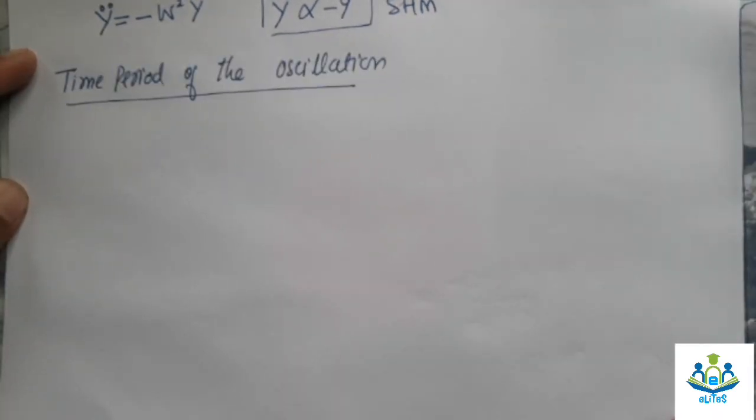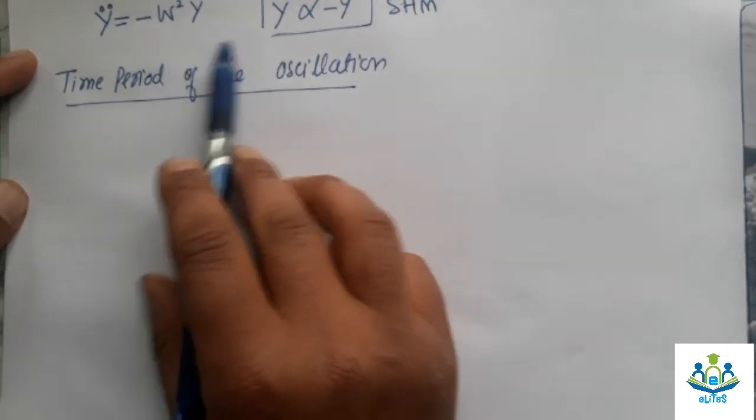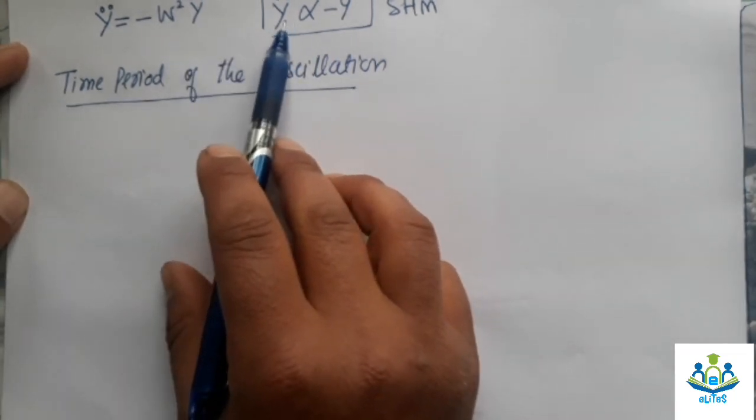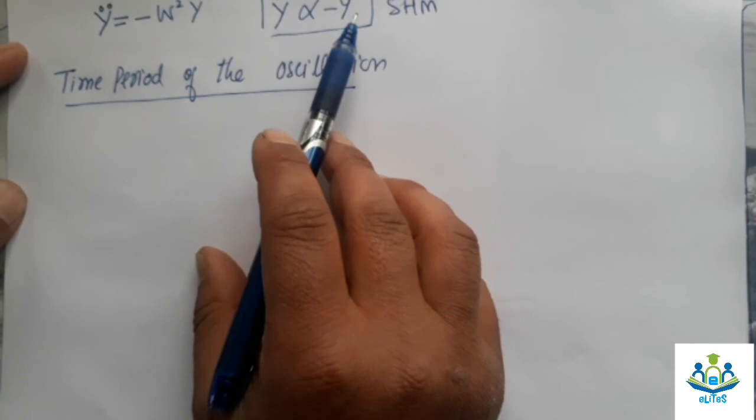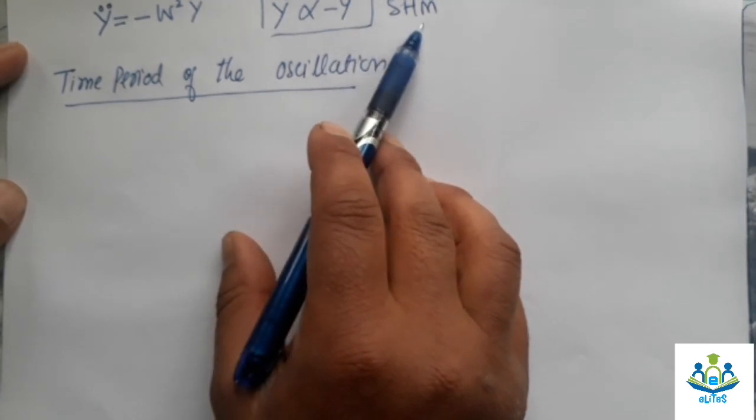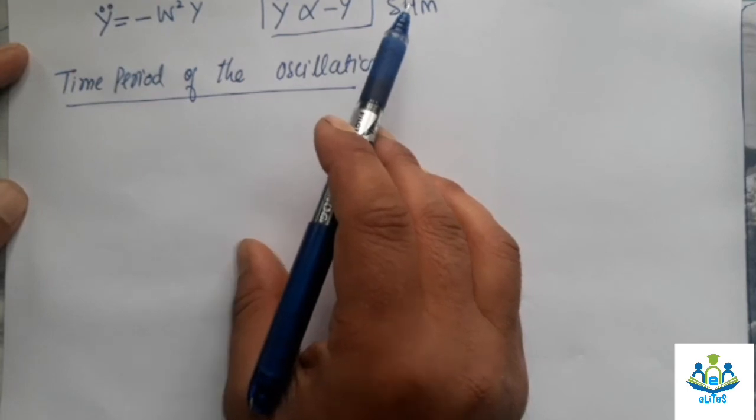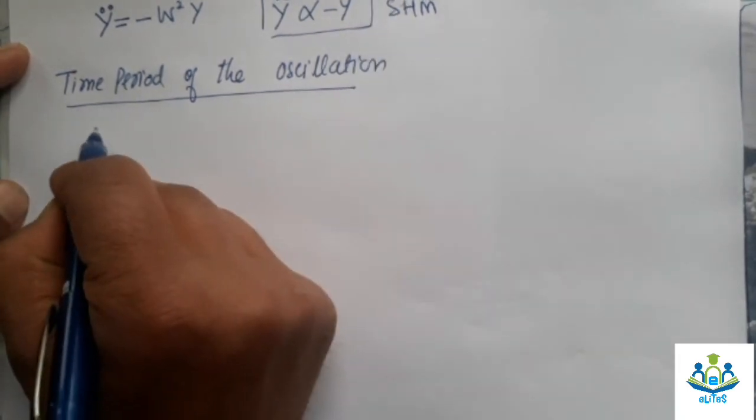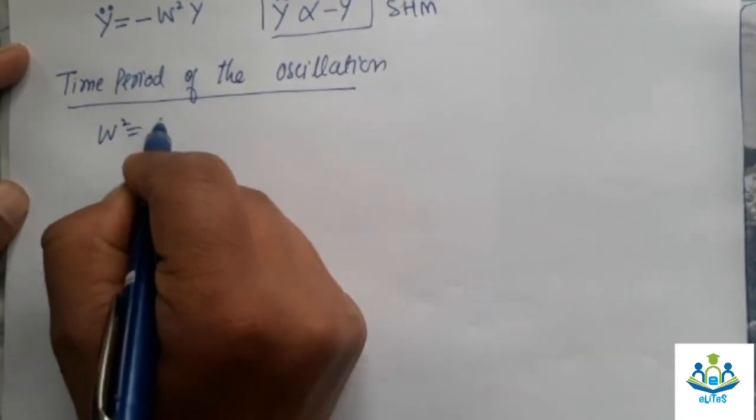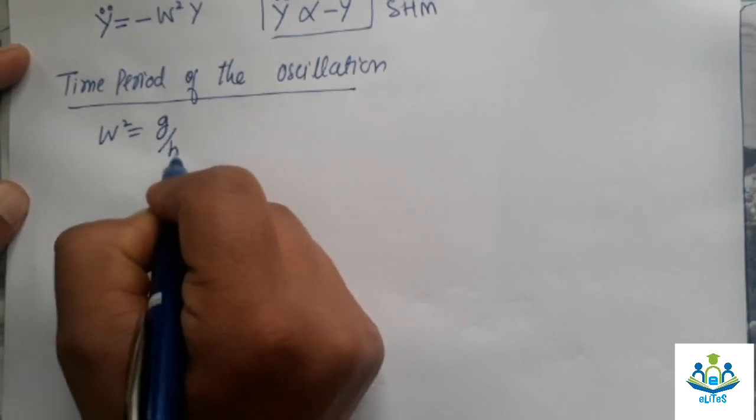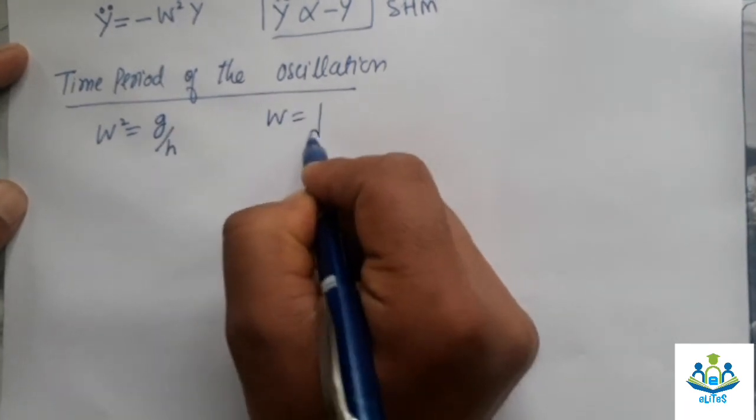Time period of the oscillation. Since we have seen this acceleration negative and displacement, so this is simple harmonic motion. Motion of liquid in U-tube is a simple harmonic motion. Let's calculate the time period. Since we have put ω² is g over H, then ω will be under root of g over H.